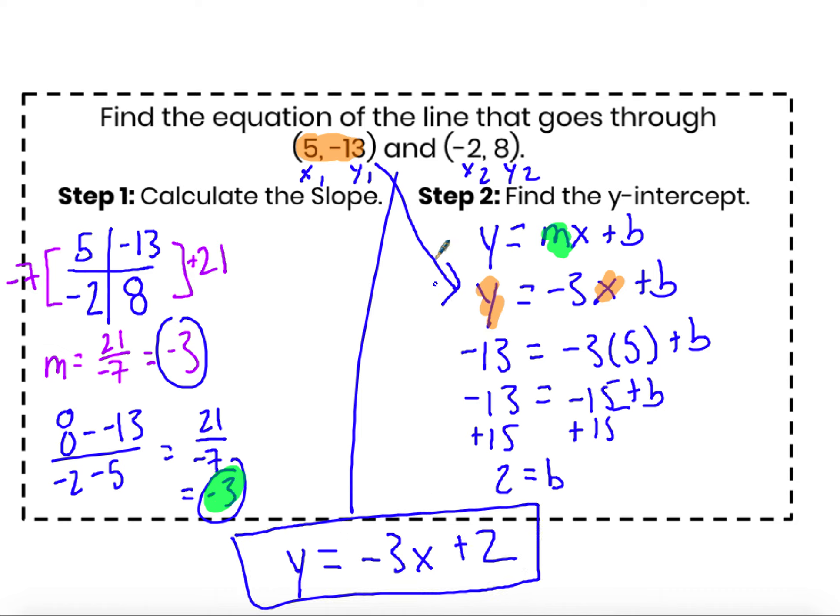To check my answer, I should go ahead and plug in that second ordered pair and make sure that it makes this equation true, since this equation should represent every ordered pair x and y that is on this line. So let's check to make sure that 8, my y value, equals negative 3 times negative 2 plus 2. Does 8 equal negative 3 times negative 2, 6 plus 2? Yes, 8 does equal 8. So that shows me that I have not made a computational mistake because both 5, negative 13 and negative 2, 8 lie on this line.